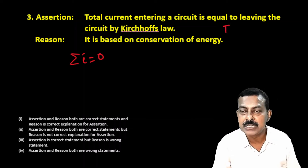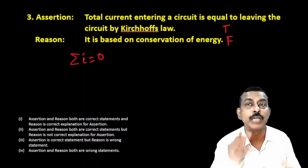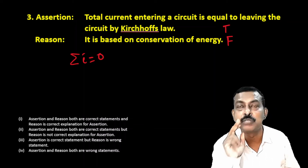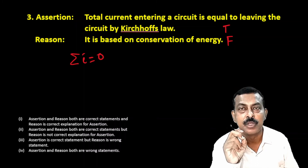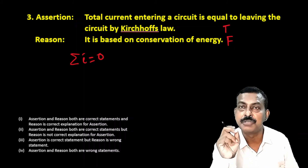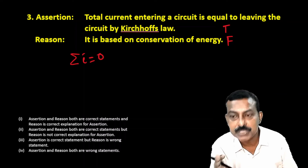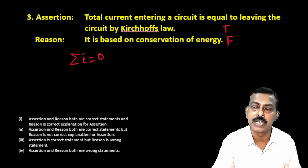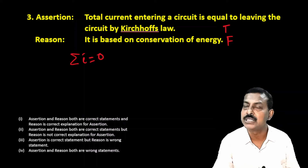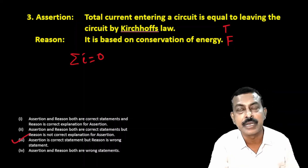The reason states it is based on conservation of energy — this is false. Kirchhoff's point rule is based on conservation of charge. It is the loop rule that is based on conservation of energy. So since it deals with the point rule here, the reason is wrong. Assertion is true, reason is false, so the third option is correct.